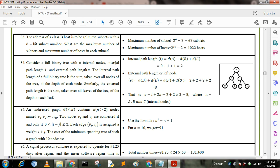Next question: consider a full binary tree with n internal nodes, internal path length i and external path length e. The internal path length of a full binary tree is the sum taken over all nodes of the tree of the depth of each node. Similarly, the external path length is the sum taken over all leaves of the tree of the depth of each leaf. The answer should be internal path length i equals da plus db plus dc. Here internal nodes are da, db, dc. That is internal path length here is 0, db means 1, and dc means 1, that is 2. External path length is 2 plus 2 plus 2 plus 2, that is 8. That is e equals i plus 2n equals 2 plus 2 into 3 equals 8, where n equals 3 internal nodes a, b, c.